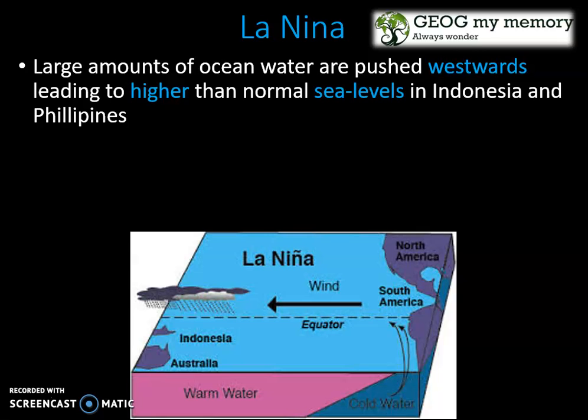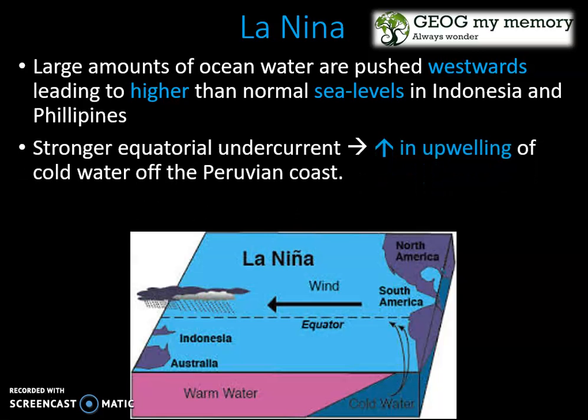levels in Indonesia and the Philippines. The stronger equatorial undercurrent leads to an increase in upwelling of cold water off the Peruvian coast.